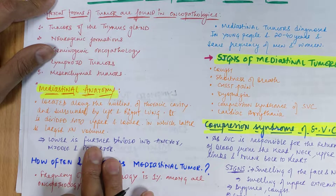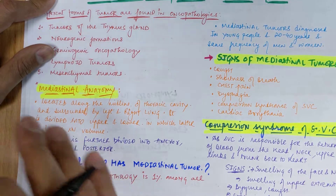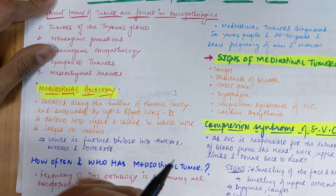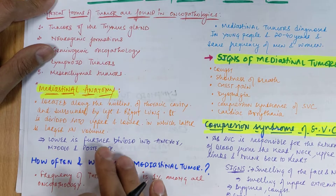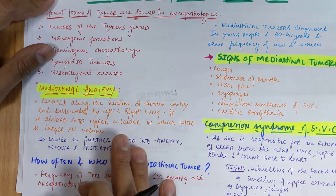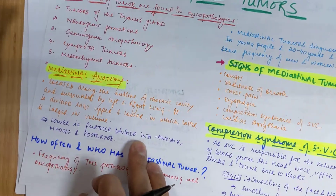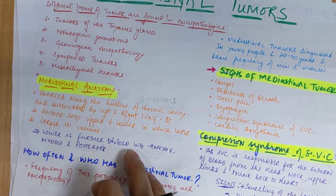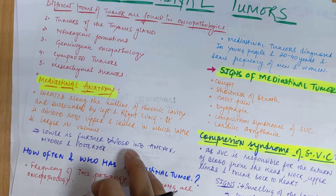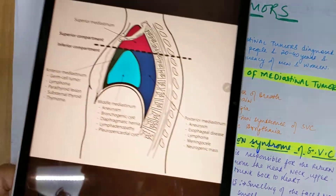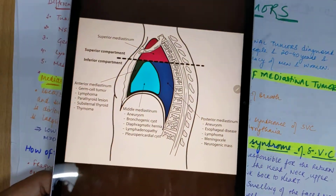The mediastinum is divided into superior and inferior compartments, and the inferior is further divided into anterior, middle, and posterior mediastinum. This is the basic anatomy.